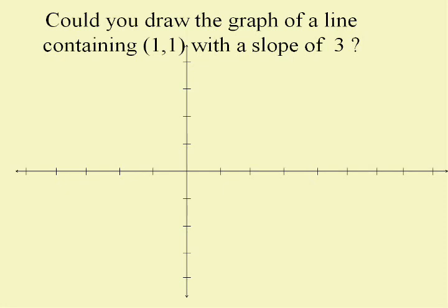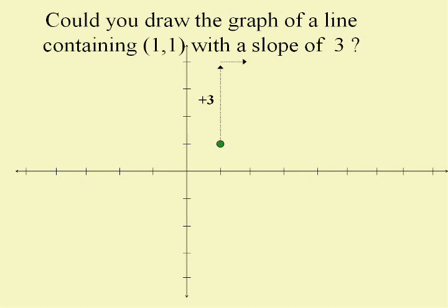Let's do another one: draw the graph of a line containing the point one-one with a slope of three. Remember that three as a fraction is three over one, so we go up three and over one to get the other point. Once we have two points, we can draw the line.